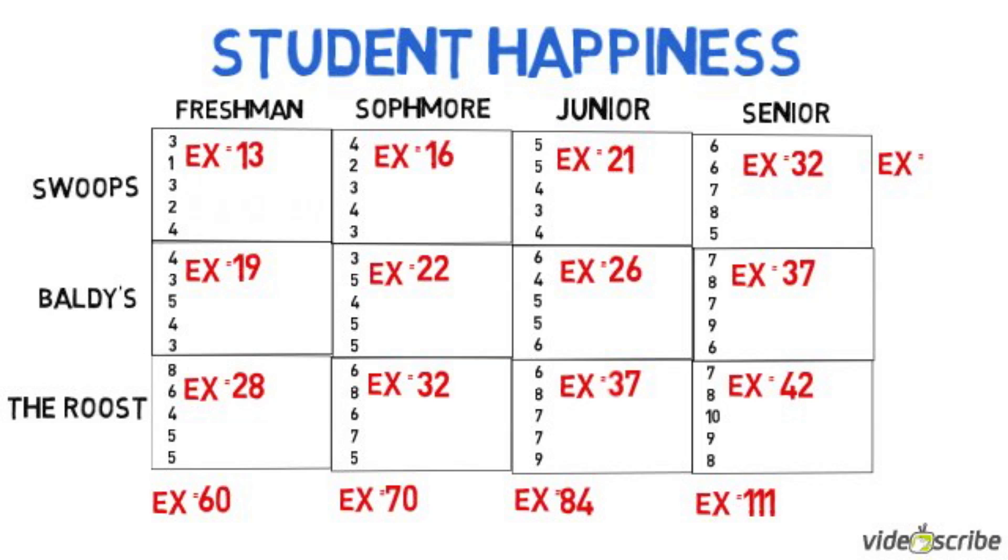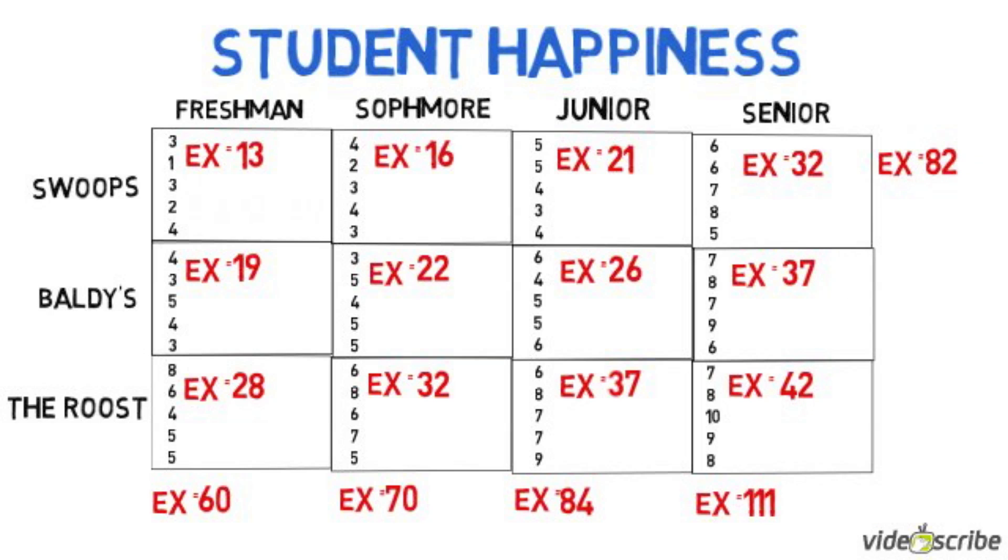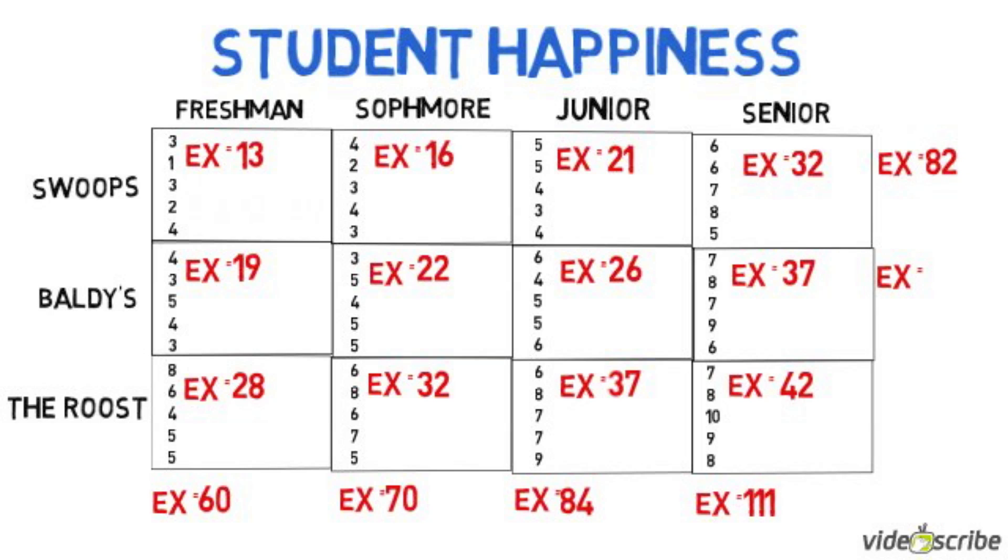Likewise, we're going to start adding the numbers across the rows. This is factor B. Factor B is where they choose to eat, whether at Swoops, Baldy's, or the Roost. Now that we have all these numbers, we're going to add all of factor B together. This will give us sum of x. Now if we square that, we'll get squared sum of x.